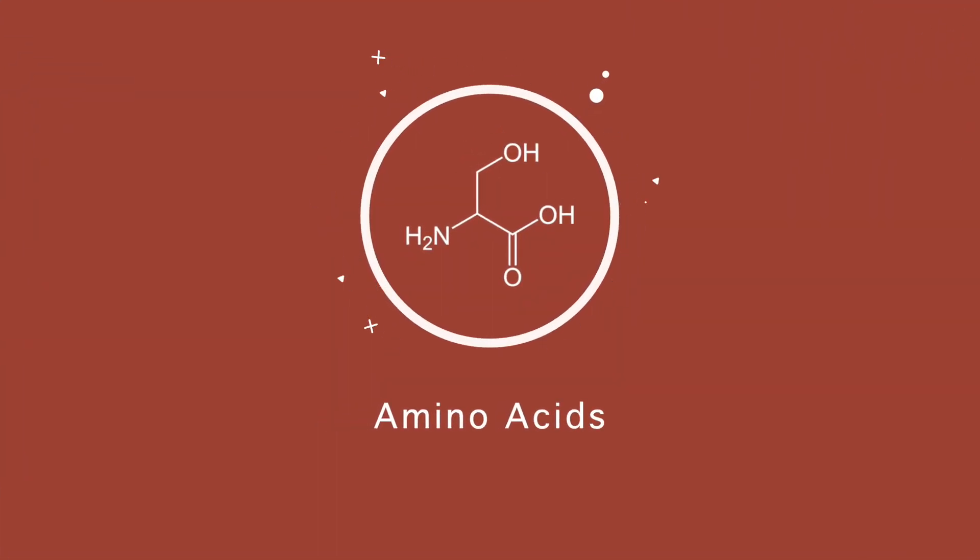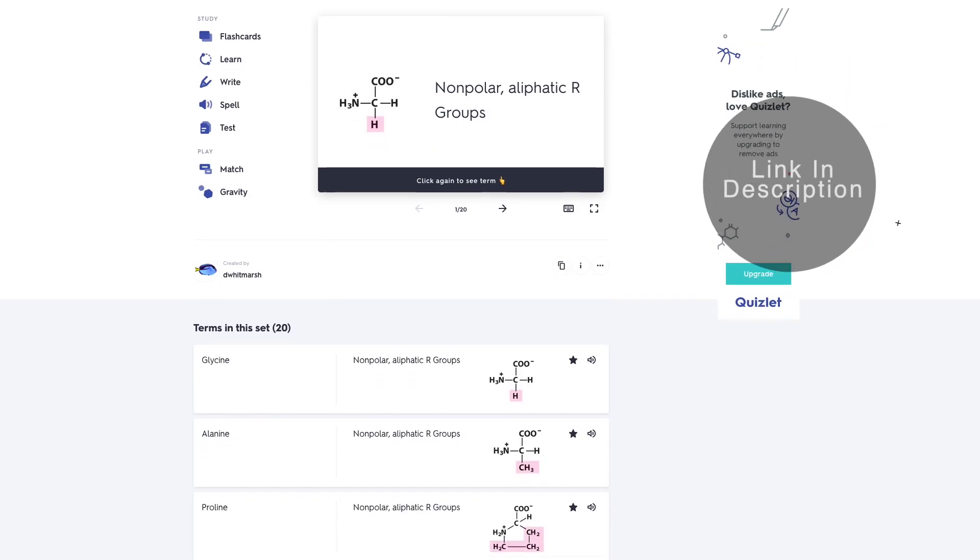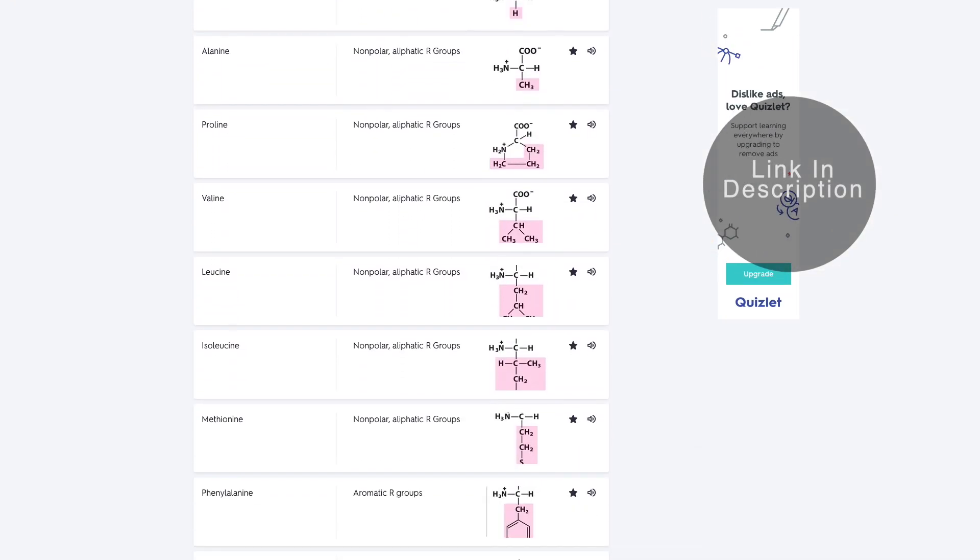Now we're going to touch on some things that you should absolutely know for the MCAT. This list is by no means a complete representation of what you need to know — it's simply a few highlights. The first is amino acids, which are found in tons of biochemistry questions in multitudes of different ways. You should know how to draw them as well as their properties. They're covered in pretty much any content review resource, but I also recommend a Quizlet deck to help make it stick.